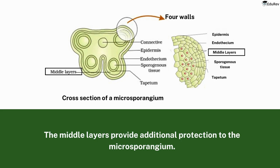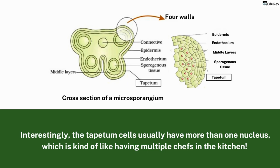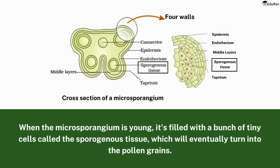The middle layers provide additional protection to the microsporangia. The innermost wall layer is called the tapetum, and it's like a personal chef for the developing pollen grains, providing them with all the nutrients they need to grow and mature. Interestingly, the tapetum cells usually have more than one nucleus, which is kind of like having multiple chefs in the kitchen. When the microsporangium is young, it's filled with a bunch of tiny cells called sporogenous tissue, which will eventually turn into the pollen grains in the process of microsporogenesis. Overall, the structure of the microsporangium is designed to protect and nourish the developing pollen grains, ensuring that they are healthy and viable for fertilization.